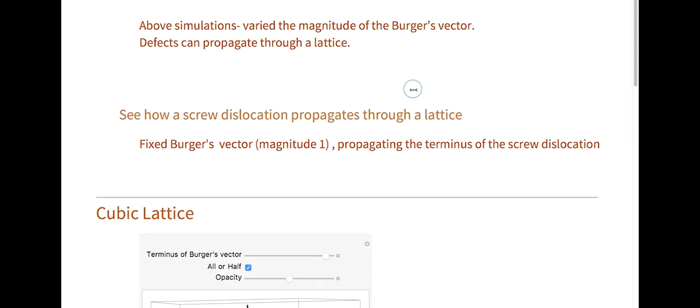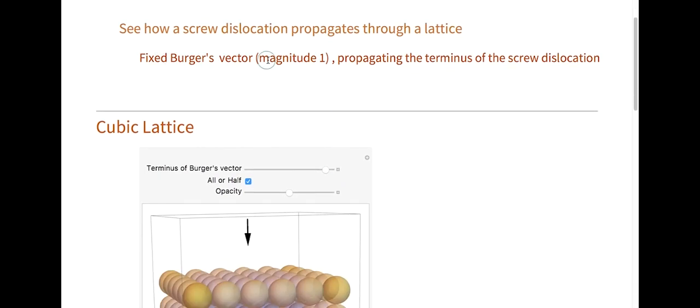In the above simulations, I varied the magnitude of the Burgers vector. But we also know that defects can propagate through lattices. In my simulation before, I actually had the vacancies moving around. So now I'm curious to see how my screw dislocation can propagate through a lattice. What I've done below is I've fixed my Burgers vector to a magnitude of 1, and I've propagated the terminus of the screw dislocation.